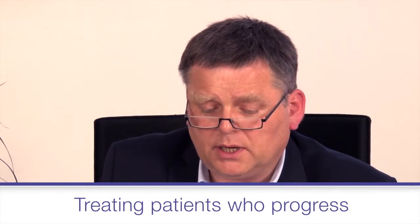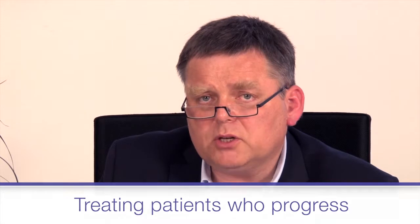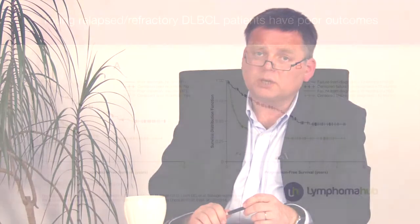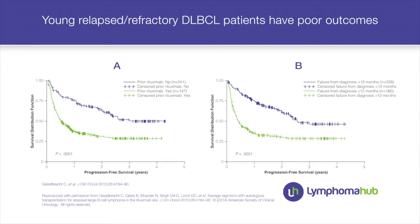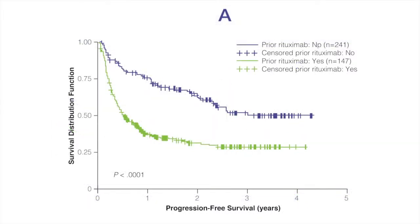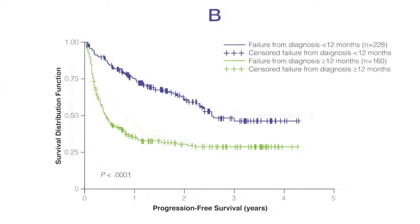At that time the patient still had good performance status — ECOG 1 — with slightly elevated LDH, placing him at low-intermediate or high-intermediate risk by secondary IPI. This is a tricky situation: the patient had just finished full induction treatment and progressed. We know from the CORAL study that patients who fail rituximab-based treatment early — within one year from the end of previous therapy — have only around 20% probability of being alive at 3–4 years.